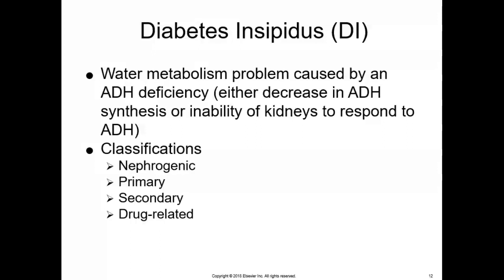Don't confuse diabetes insipidus with diabetes mellitus — type 1 and type 2 diabetes involving the pancreas and insulin are diabetes mellitus, which is totally different. Diabetes insipidus is a disorder of the posterior pituitary gland involving ADH deficiency. Dehydration increases plasma osmolarity and serum sodium levels, stimulating thirst. If the thirst mechanism is poor or the patient cannot obtain water, dehydration can become severe and lead to death. Do not deprive any patient suspected of having diabetes insipidus of fluids for more than 4 hours, as severe dehydration can result.